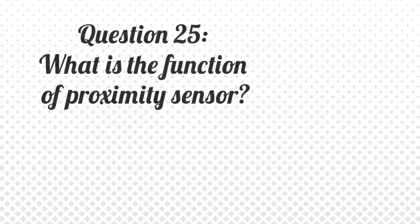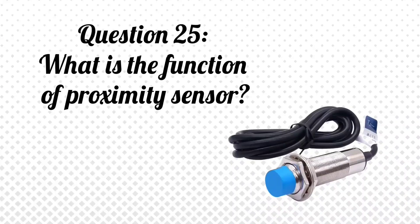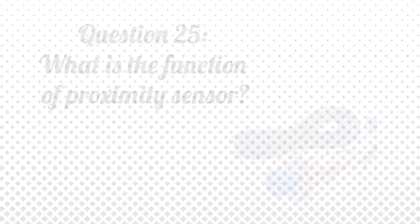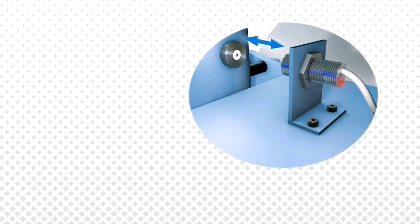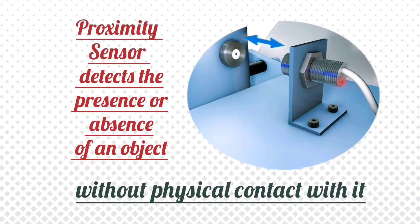Question 25: What is the function of a proximity sensor? Answer: A proximity sensor detects the presence or absence of an object without physical contact with it.